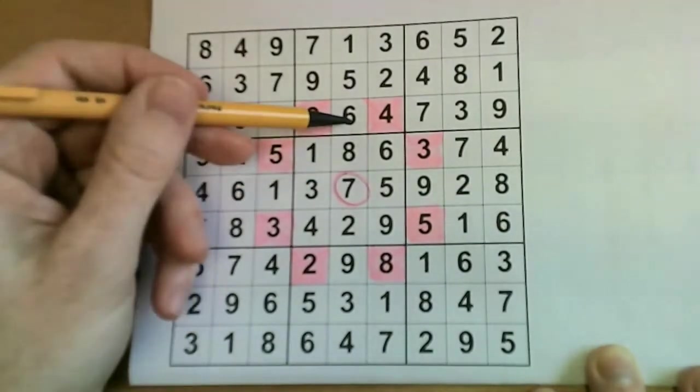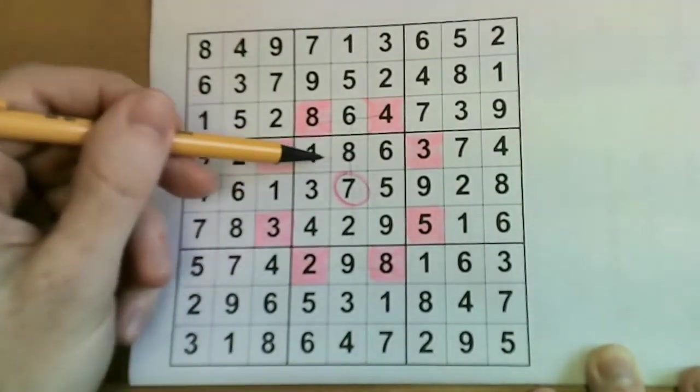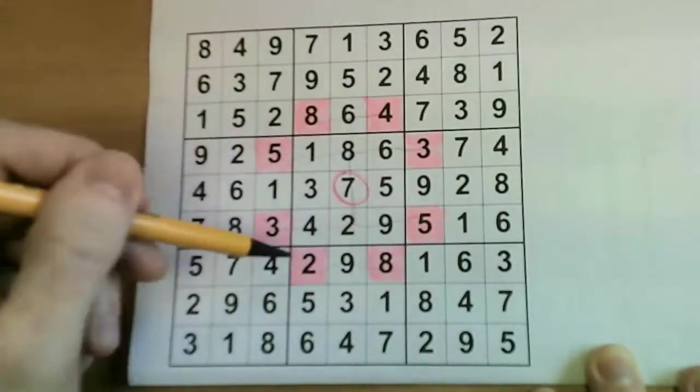And a Knight moves two squares vertically and then one horizontally, or one vertically and then two horizontally. So this can affect a maximum of up to eight squares.